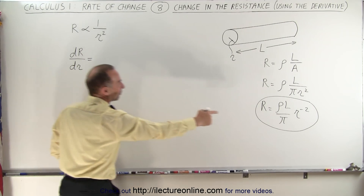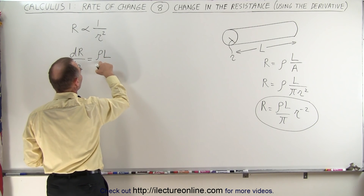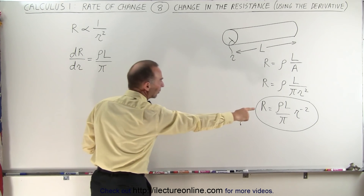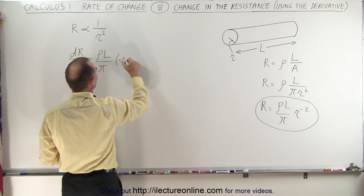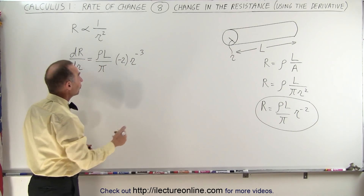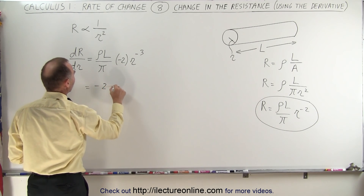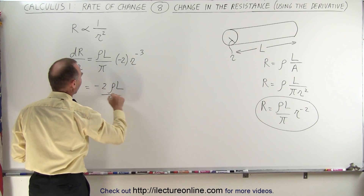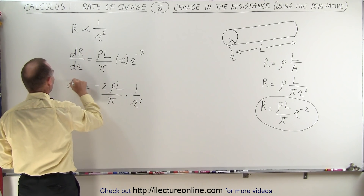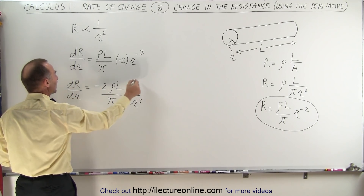So that means we're going to take the derivative of our equation right there. We have three constants: the resistivity, the length, and pi. We take the derivative of r to the minus 2, giving us minus 2 times r to the minus 3, because we subtract 1 from the exponent and bring the original exponent out. This means dR/dr is equal to minus 2 times rho times L over pi, times 1 over r cubed. And so that's the change of the resistance with respect to the radius.